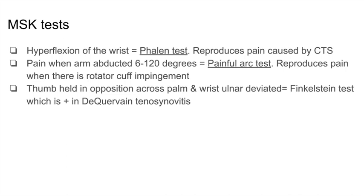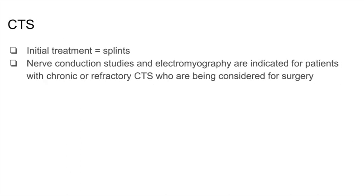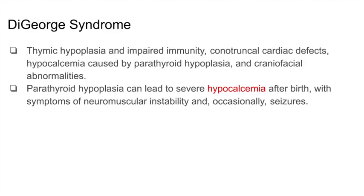Carpal tunnel syndrome is due to entrapment of the median nerve, and the initial treatment is with splints. But if a patient has been wearing splints faithfully for six months and is still in pain, the next best step would be a nerve conduction study or EMG. This is indicated for patients with chronic or refractory carpal tunnel syndrome who are being considered for surgery. USMLE likes immunodeficiencies for all step exams — Step 1, Step 2 CK, and definitely Step 3.